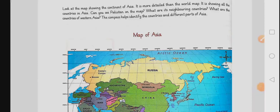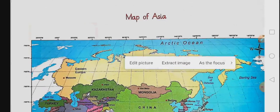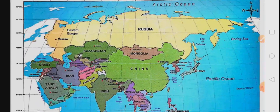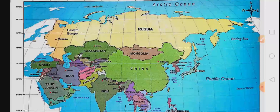Here is the map of Asia. Look at the map of Asia showing the continent. It is more detailed than the world map. It is showing all the countries in Asia. Let us have a good look at this map. Here, this map is the map of Asia and it is a large scale map. Large scale map means it is telling us in detail about the continent Asia. And you know, Pakistan is located in this continent Asia.